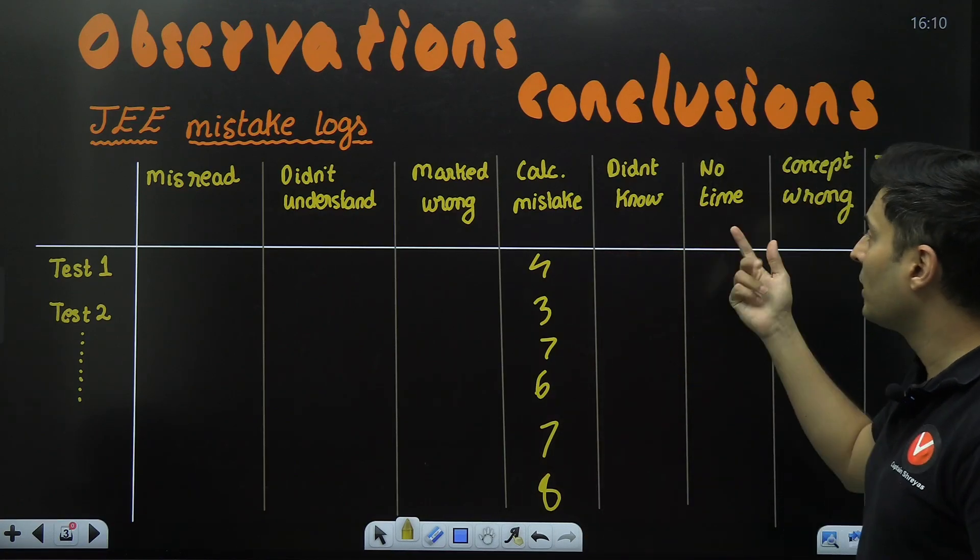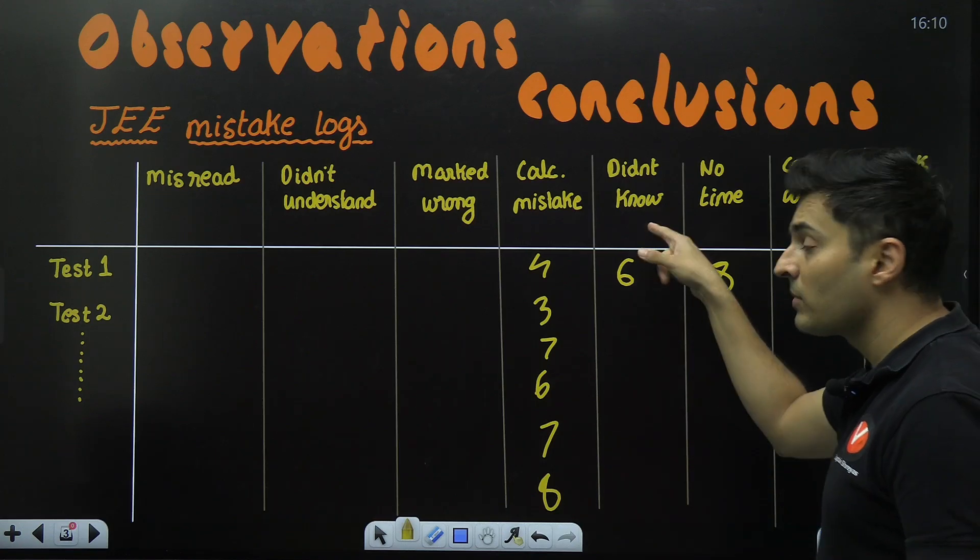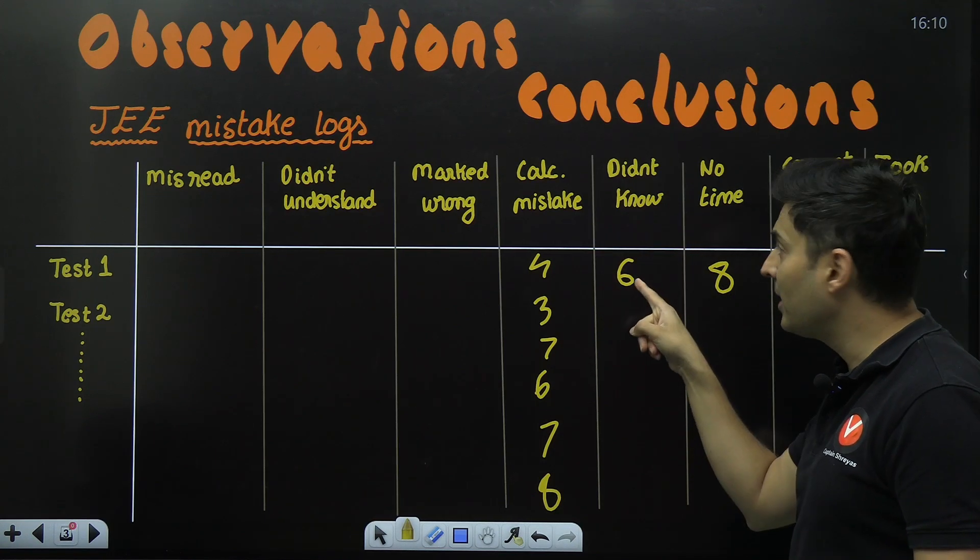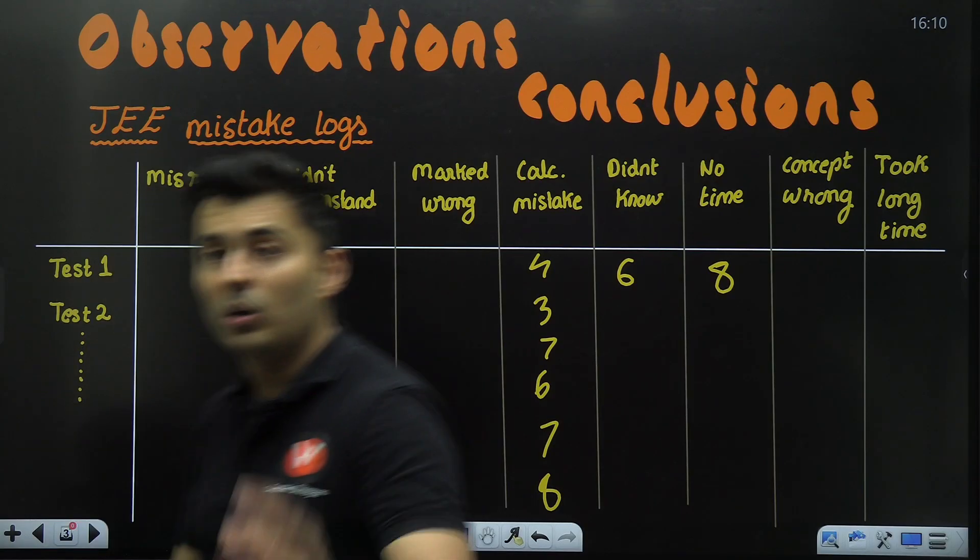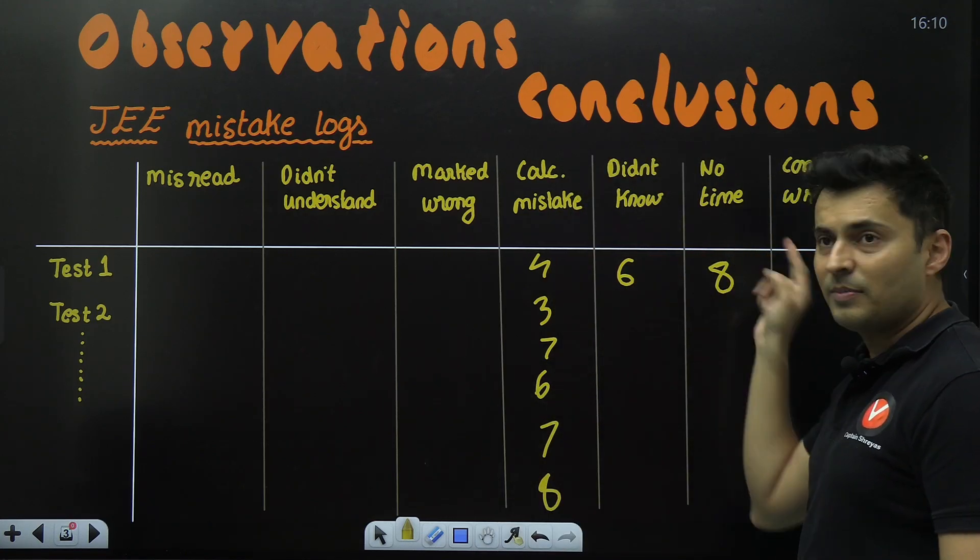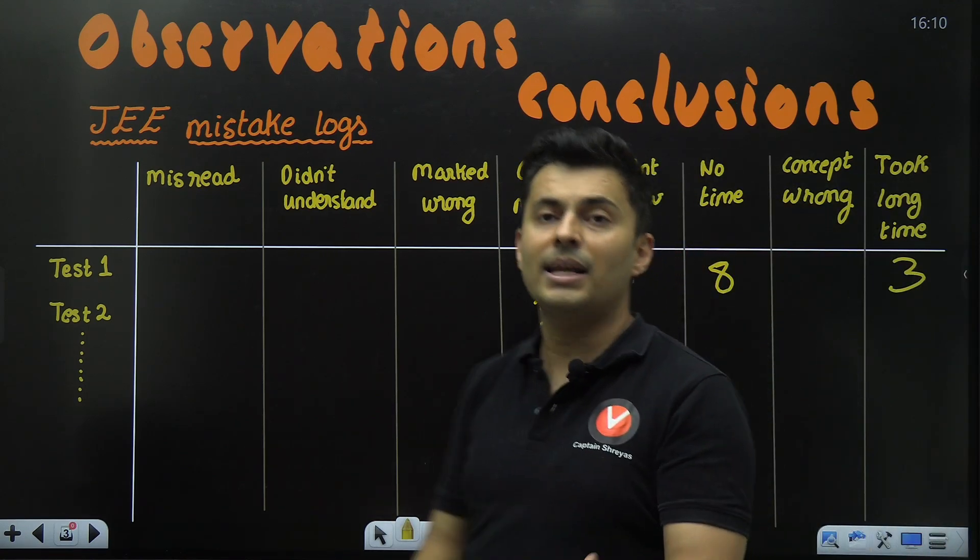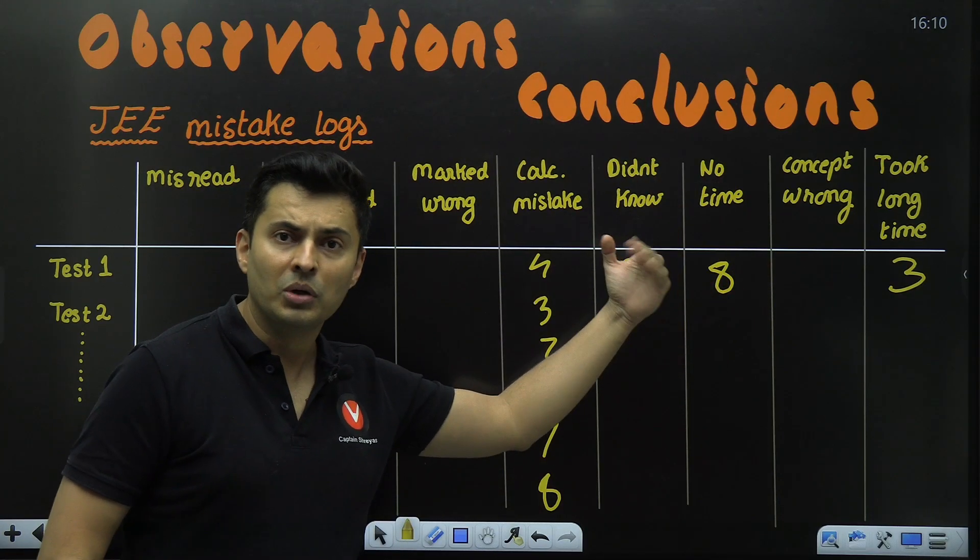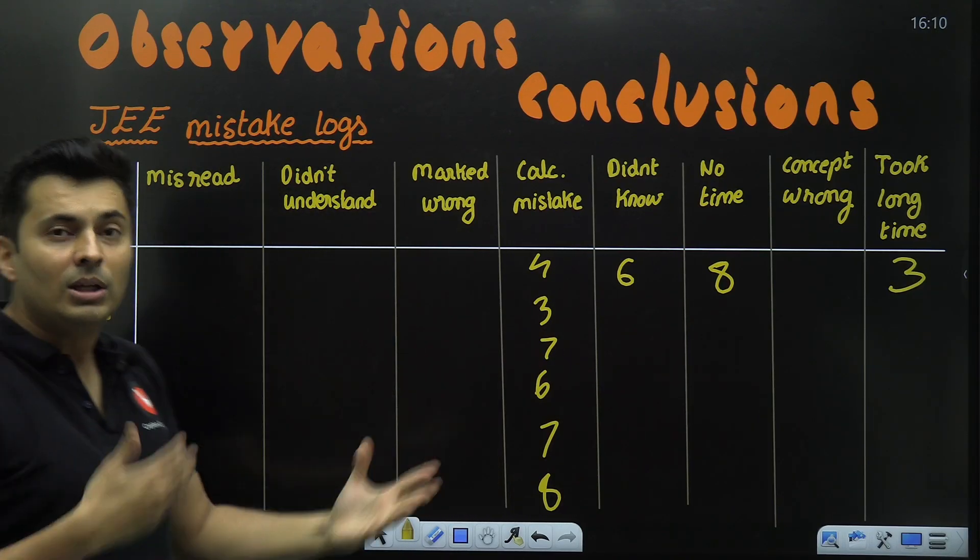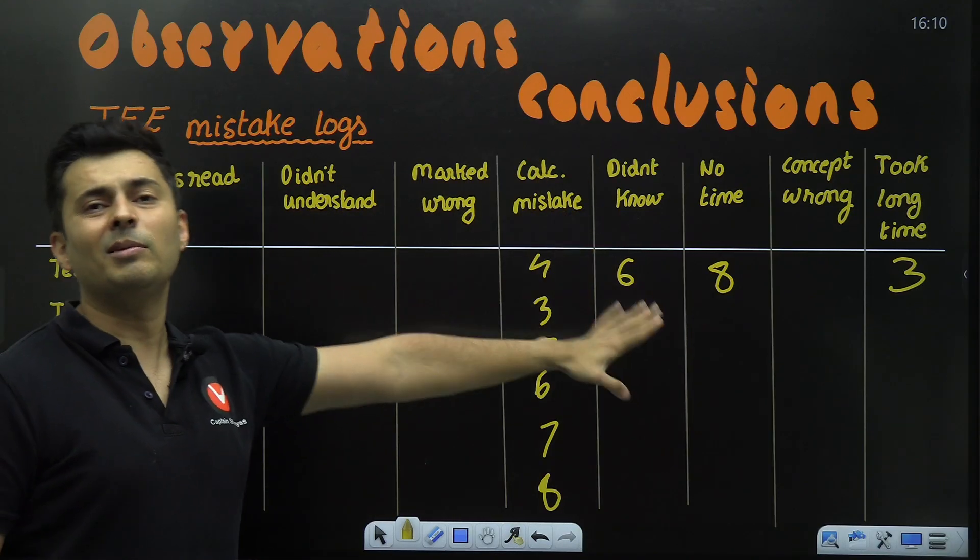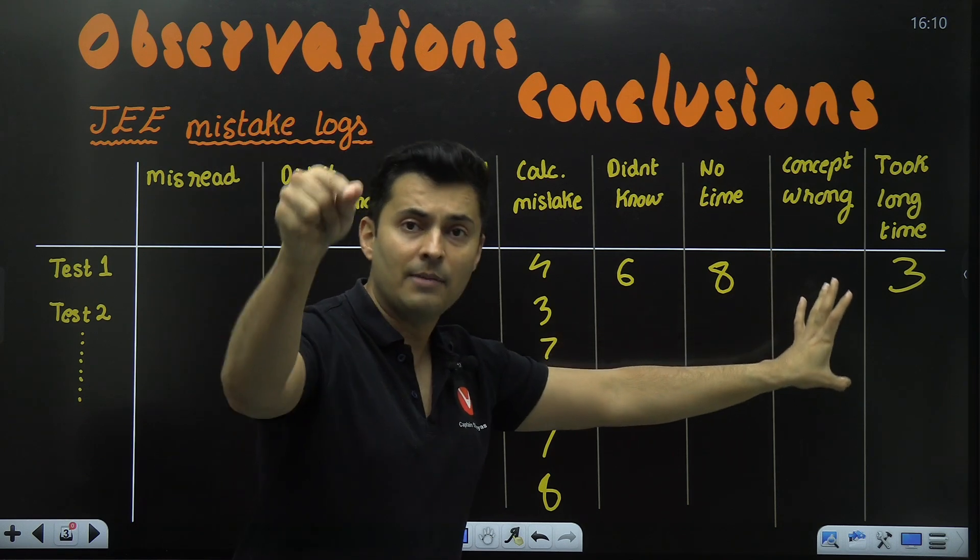Once you do this analysis, you understand which kind of mistakes you're doing again and again. Maybe every time calculation mistakes—four mistakes, three mistakes, seven mistakes. That clearly tells calculation mistakes are happening. I need to do my rough work neatly. Maybe there were six questions you didn't know and eight questions you didn't have time for—that means you wasted a lot of time thinking about it.